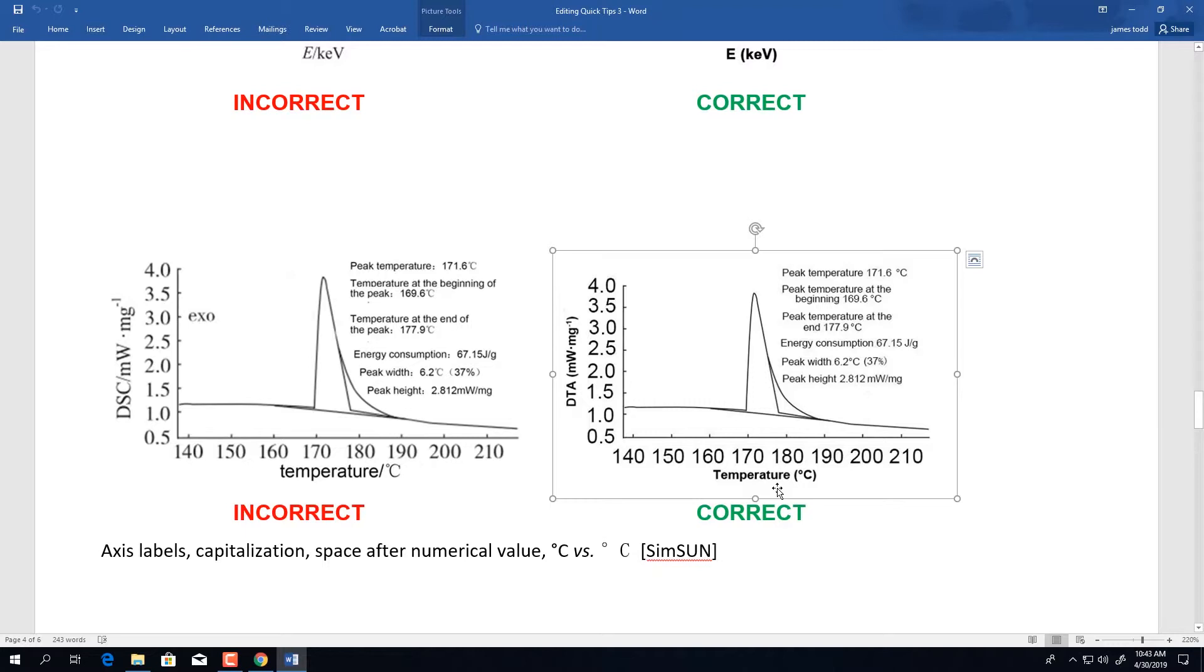Additionally, the legend should be edited as well. Ensure that there is a space between numerical values and units of measurement. On the left-hand side, this was not the case. On the right-hand side, the authors have added the space between numerical values and units of measurement.